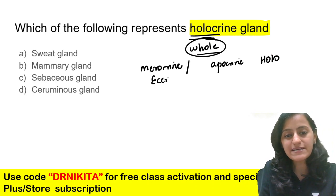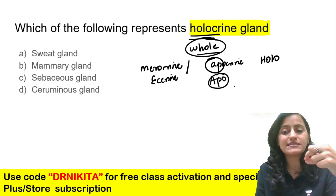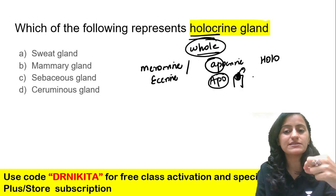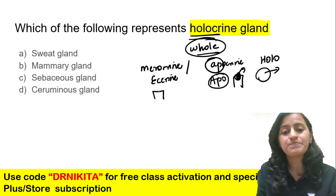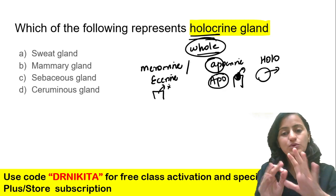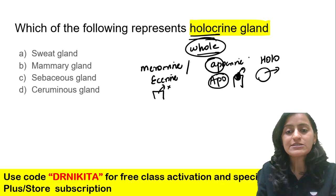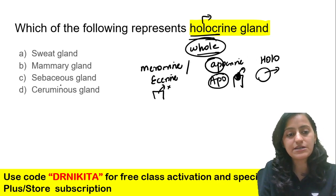Merocrine is also called eccrine. From the term, we know that apo means above — so the tip of the cell is lost during secretion. Holo means the entire cell is gone. Merocrine or eccrine means only the secretions go out. So which is a holocrine gland? The options are: sweat, mammary, sebaceous, ceruminous.